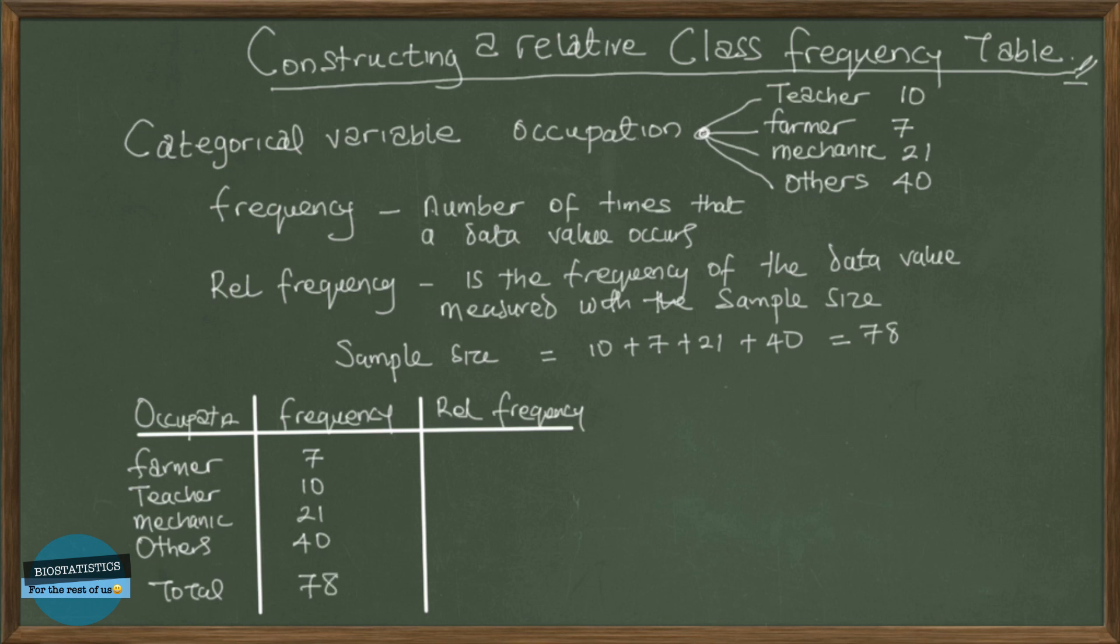So what proportion of the total is 7? What proportion of total are farmers? What proportion of 78 are farmers? So 7 out of 78. So our relative frequency here will be 0.089 and this is just 7 divided by 78. Remember I told you it's a proportion. For teacher too is 0.128 and this is just 10 divided by 78 and same thing goes for all the other ones.